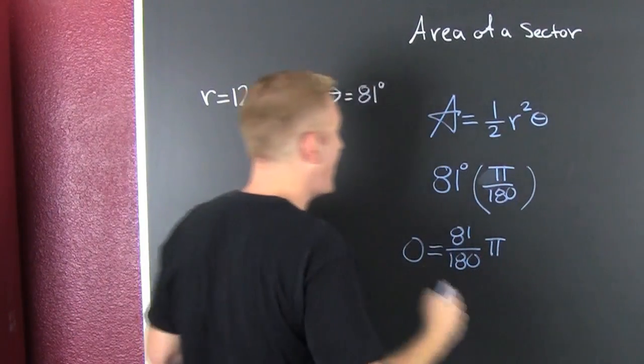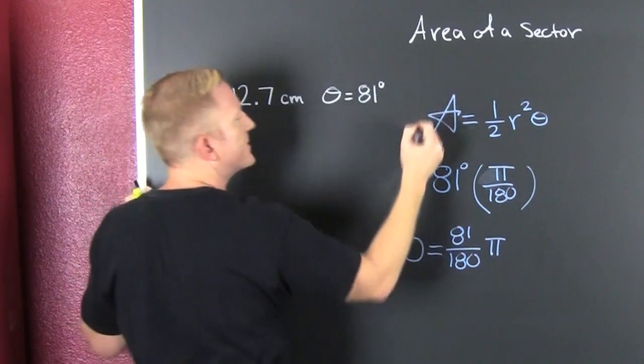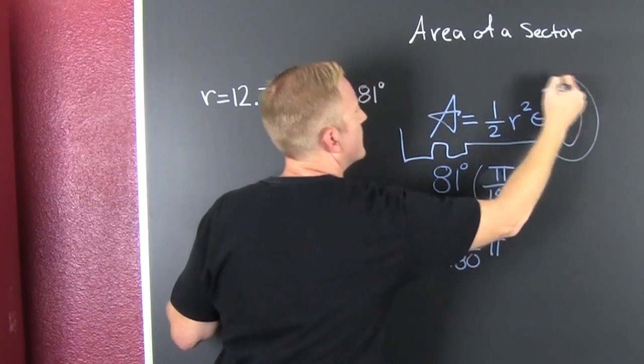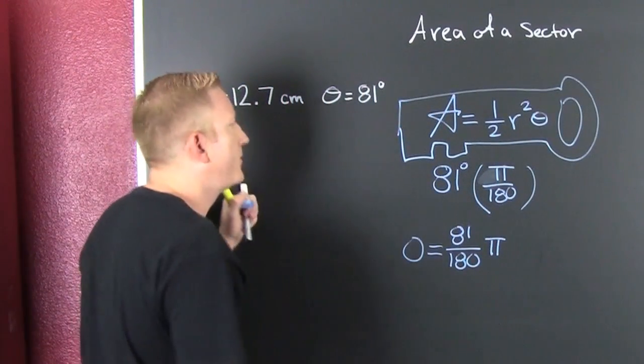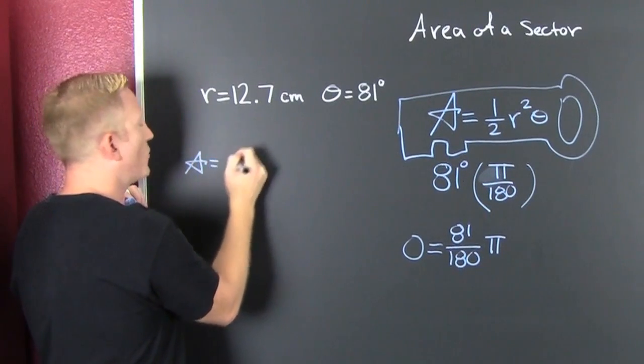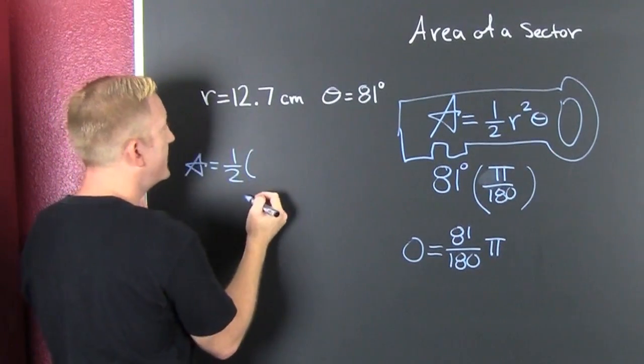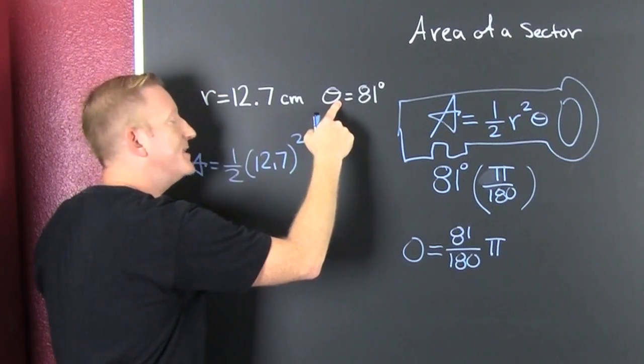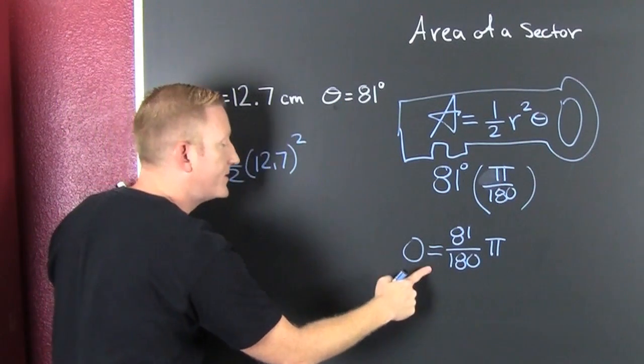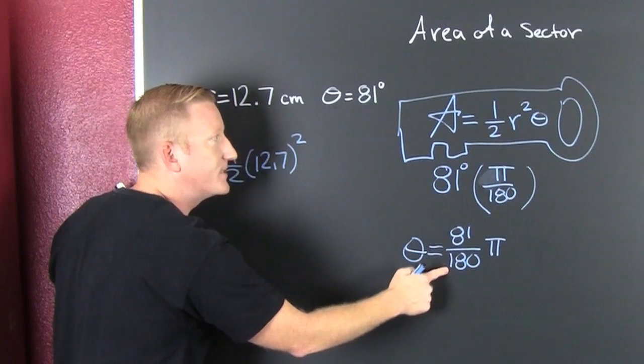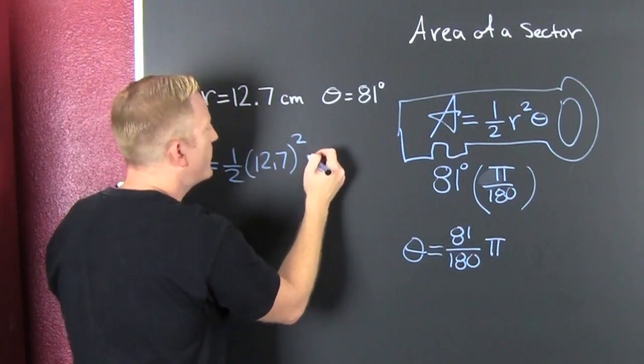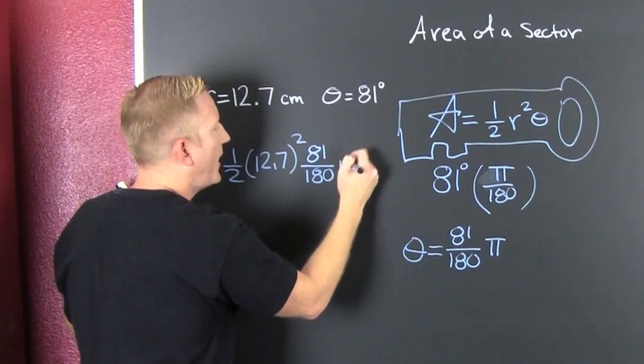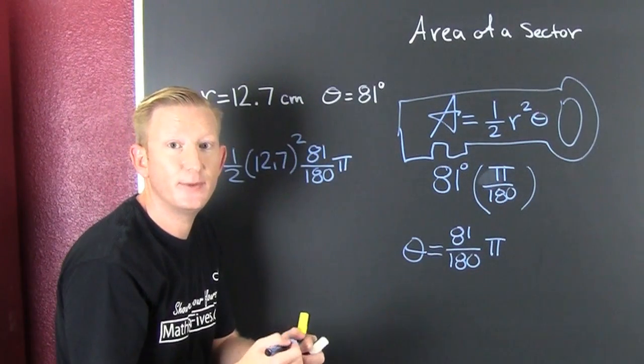So then we're going to use that. This thing is going to be key to our problem. Our area is one half our radius which was 12.7 squared times our theta, which isn't that theta well I guess it is, we translated it into radians because our formula needs radians, and then we're going to multiply that by 81 over 180 pi, and then we're going to throw that into our calculator and see what that is.